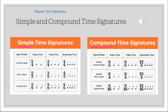So the simple time signatures, the top number would be two, three, or four. Very simple numbers: two, three, or four. And then the compound time signatures, the top number tends to be a little bit bigger like six, nine, or twelve, or basically a multiple of three.